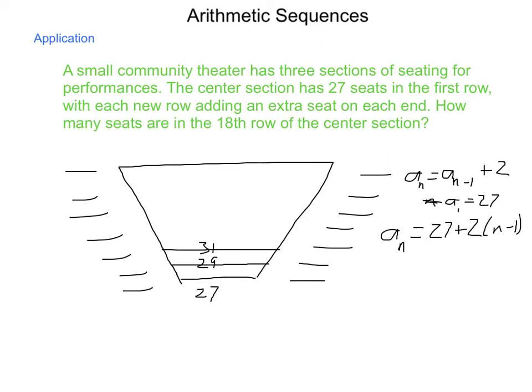So now, in order to find the 18th, we can use either formula. The easier method here is going to be to use the explicit formula. So we're going to go with a sub 18 equals 27 plus 2 times 18 minus 1. Now, running through our simplification process here, we come out that a sub 18, the 18th row of this theater, has a total of 61 seats.